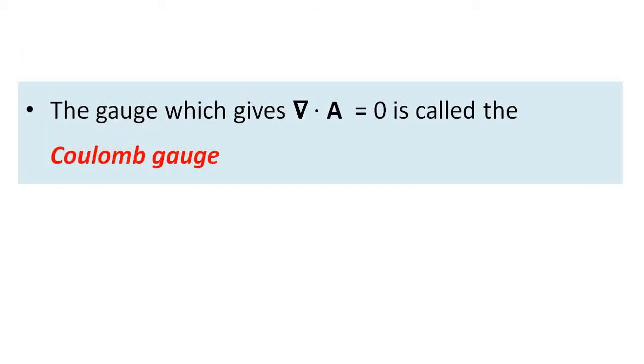Now the gauge which gives del dot A equal to 0 is called Coulomb gauge. Del dot A equal to 0 is the Coulomb gauge condition.